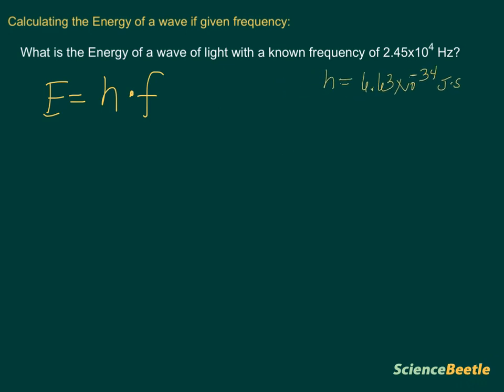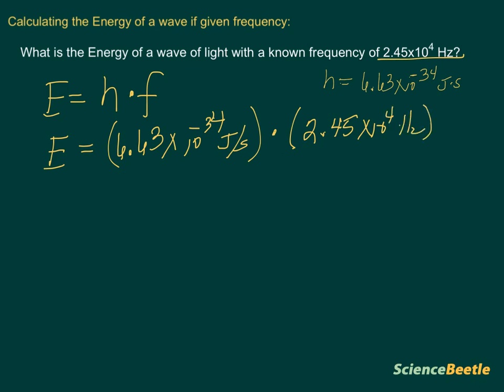If we plug into this equation here, we're going to get the following. E is equal to Planck's constant, so that's going to be 6.63 times 10 to the negative 34 joule seconds. And we're going to multiply this times the frequency, which is 2.45 times 10 to the 4th hertz. If we multiply these two together, that should give us the answer that we want.